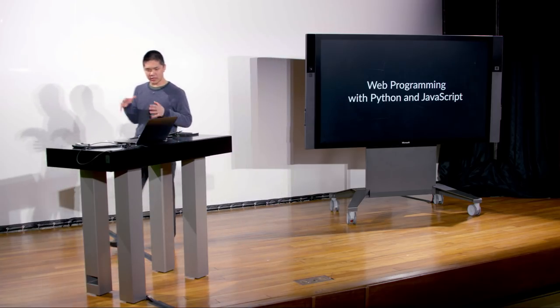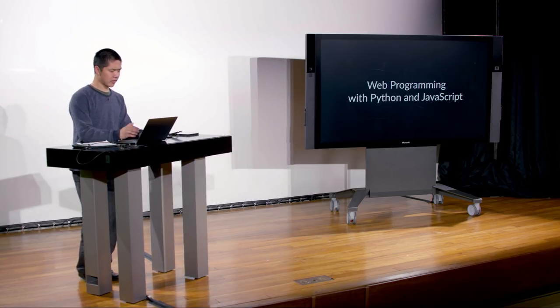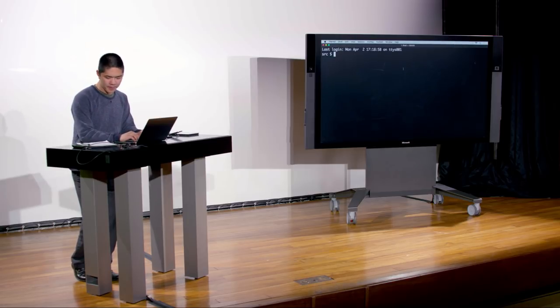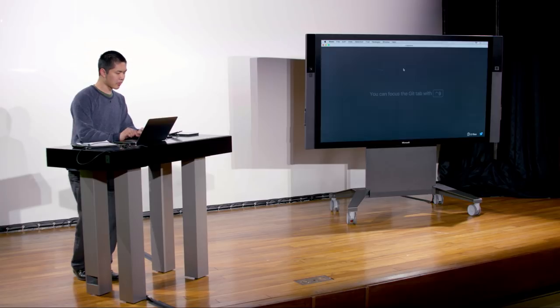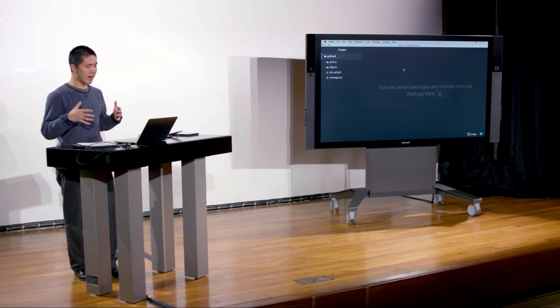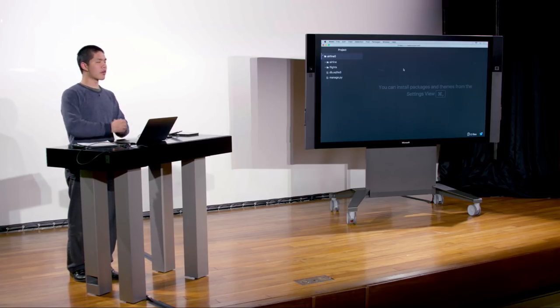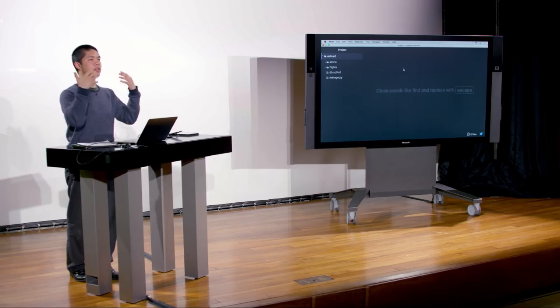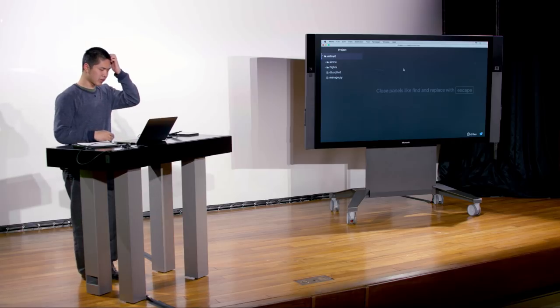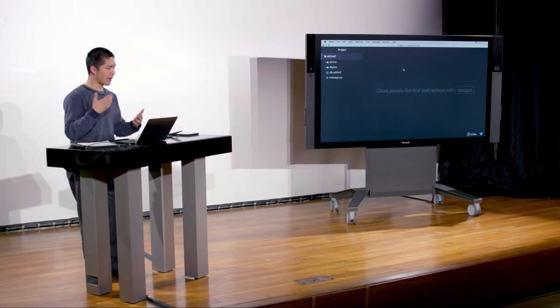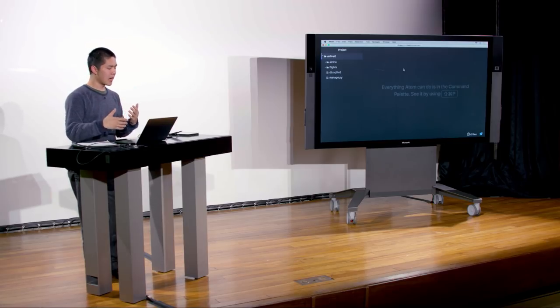Before we dive into the main focus of today — testing and continuous integration and continuous delivery — we're going to talk a little more about Django features we didn't quite get to last time. The first thing we'll look at is how we might customize the administrative interface inside the same airline example we've been using. There are many options available, and I'll show you a couple.